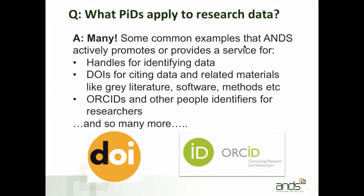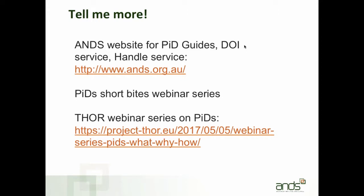There are many different types of persistent identifiers that apply to research data. Common examples that ANDS actively promotes or provides a service for include handles for identifying data, DOIs for citing data and related materials, and ORCIDs for people identifiers. These persistent identifier schemes differ in purpose - some apply generally to all scholarly resource types, some are discipline specific. The underlying technology differs between them, as does the governance structure - some are non-profit, some are company driven. They also differ in how much metadata is collected and in their extent of use.